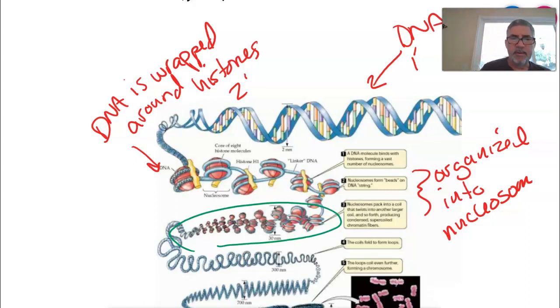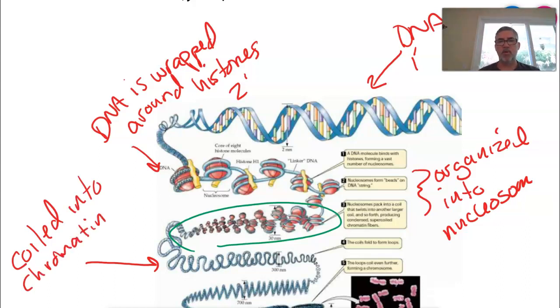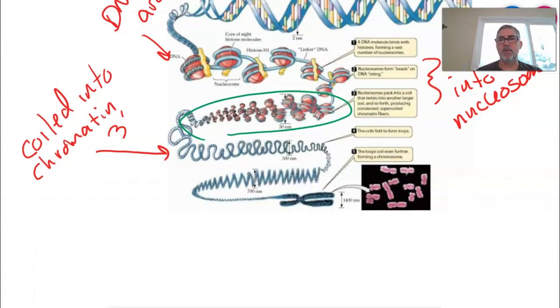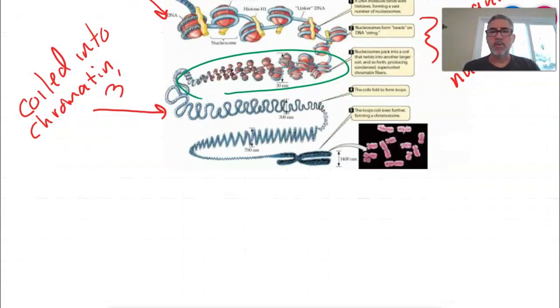So this now is going to be coiled into chromatin, right? So that's our tertiary structure. So remember the chromatin, I just want to talk about that briefly. So once we have chromatin now, this is our chromatin.